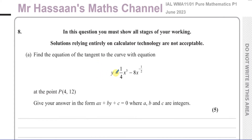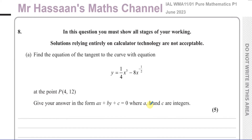This question is about finding the equation of a tangent to a curve. The curve is y equals a quarter x cubed minus 8x to the power of negative one half. We're going to find the equation of the tangent at the point P, which is given, and the answer should be in the form ax plus by plus c equals 0, where a, b, and c are integers.